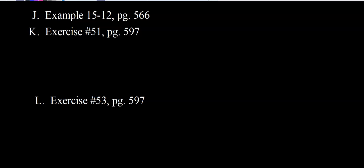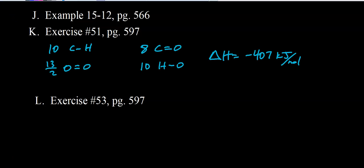Let's try problem 51 on page 597. In the reactants we have 10 C–H bonds, 4 C–C single bonds, and 13.5 O=O double bonds. In the products we have 4 carbon dioxide molecules giving 8 C=O double bonds, and 5 water molecules giving 10 O–H bonds. Delta H for the reaction comes out to negative 407 kilojoules per mole.